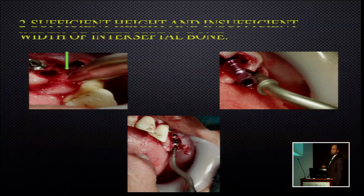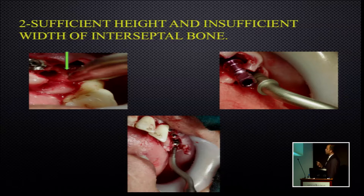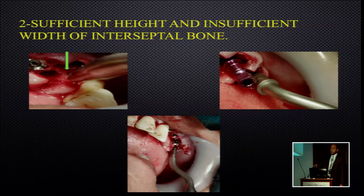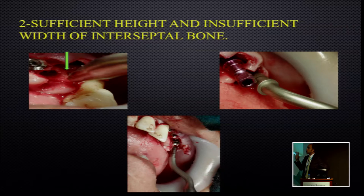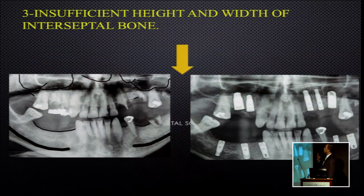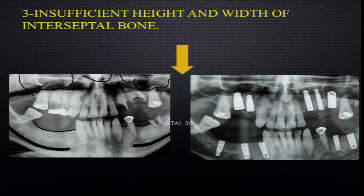The second option is when we have sufficient height for the interradicular bone but insufficient width. In these cases, he performs condensation of the interradicular bone and places the implant to avoid complications. His third option was the palatal route when there is total loss of the interradicular bone — which is what we used to do before thinking of using the interradicular bone.